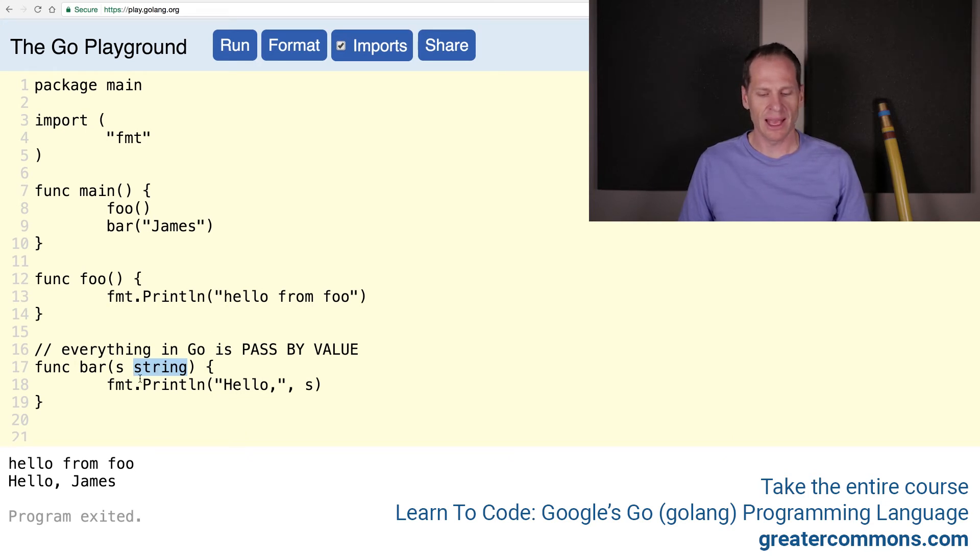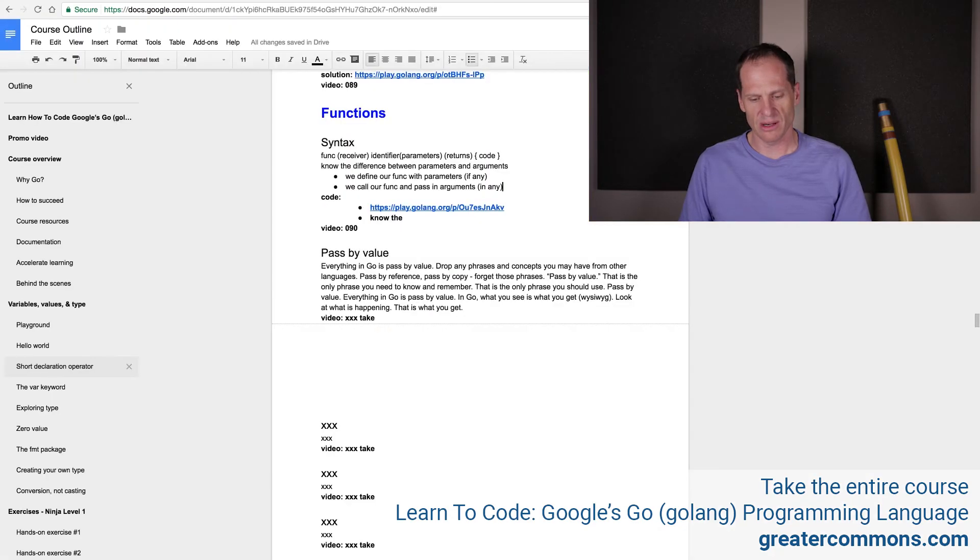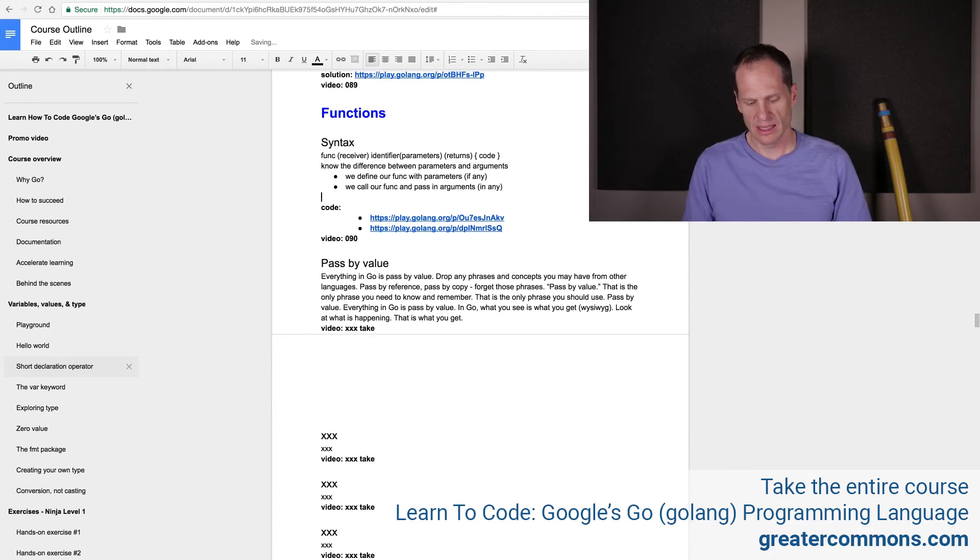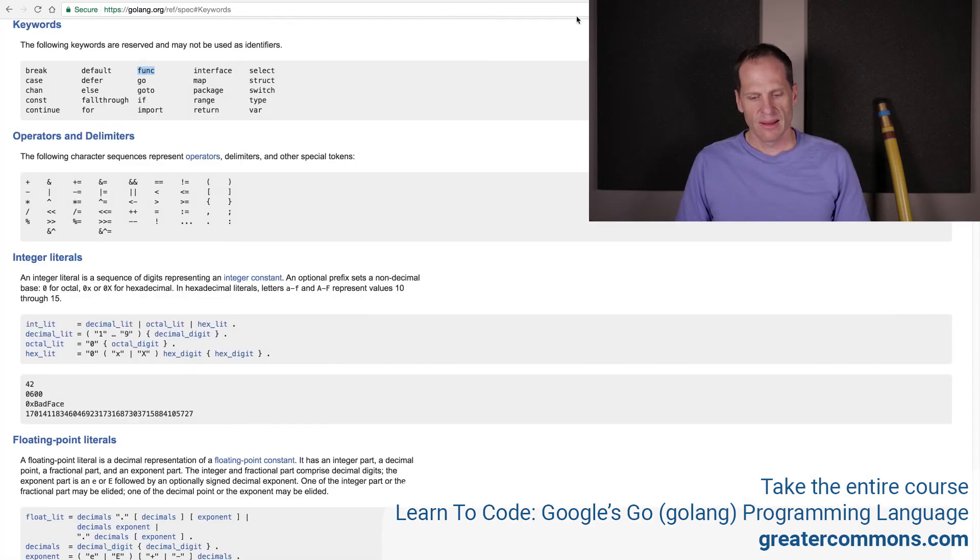So I pass that in and that totally runs. So I'm going to copy this code and put it over into our course outline. And there we go. And I will put here: Everything in Go is passed by value. Cool, nice.